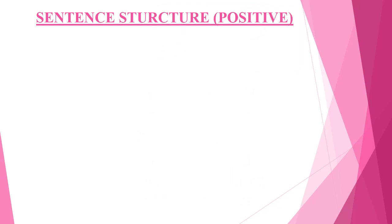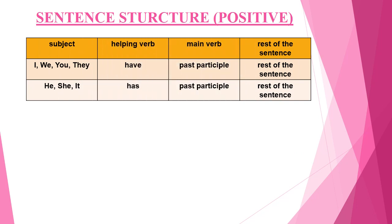Let us see the sentence structure of present perfect tense — positive form: subject + helping verb + main verb + rest of the sentence. With I, we, you, and they, we will use 'have' with the past participle or third form of the verb. With he, she, and it, we will use 'has' plus past participle.